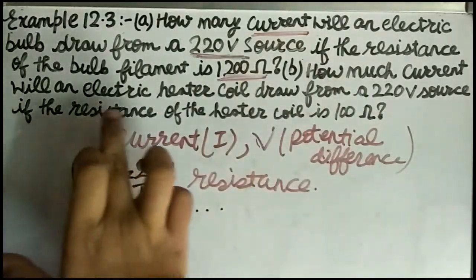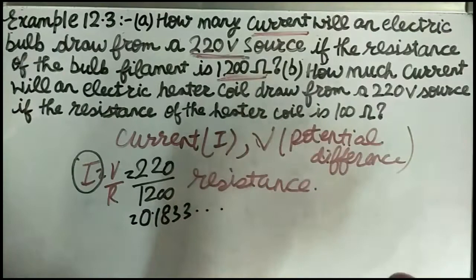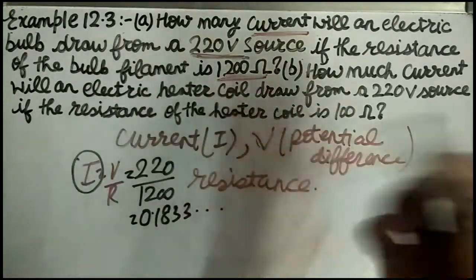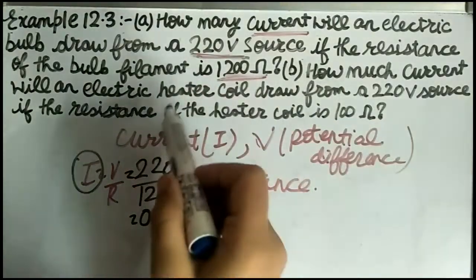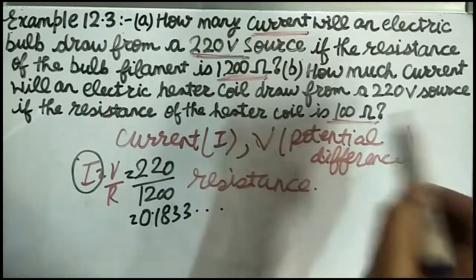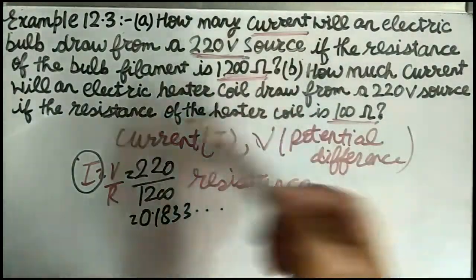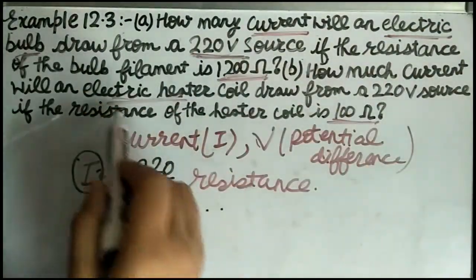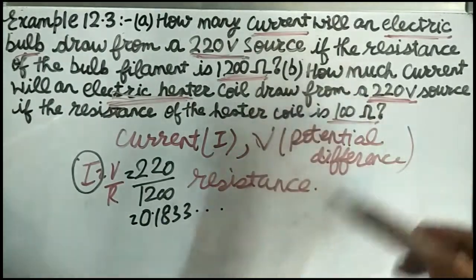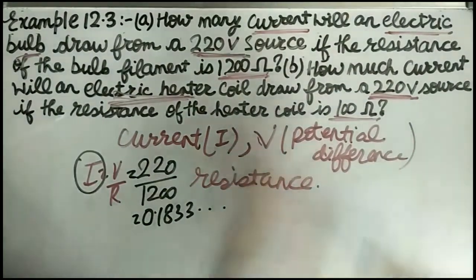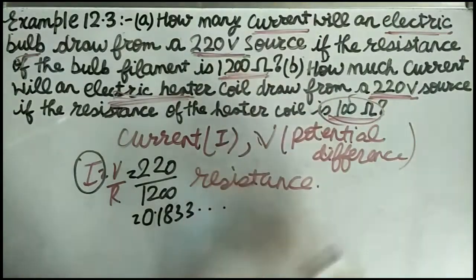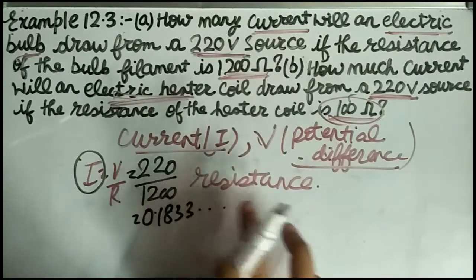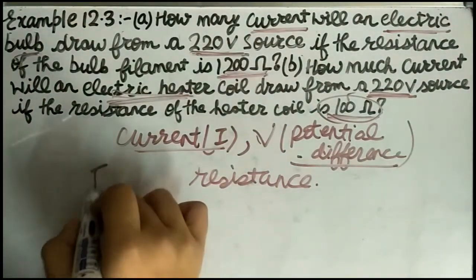Part two: how much current will an electric heater coil draw from a 220 volt source if the resistance of the heater coil is 100 ohm? These two parts use the same approach. The difference is that resistance is now 100 ohm instead of 1200 ohm. Voltage remains 220 volt and we find current.